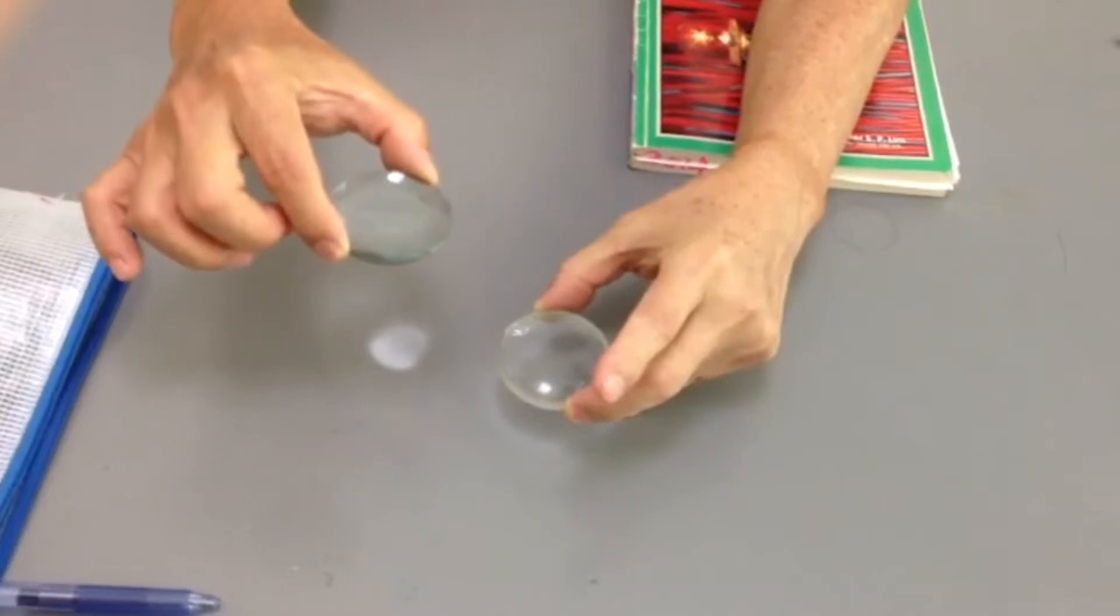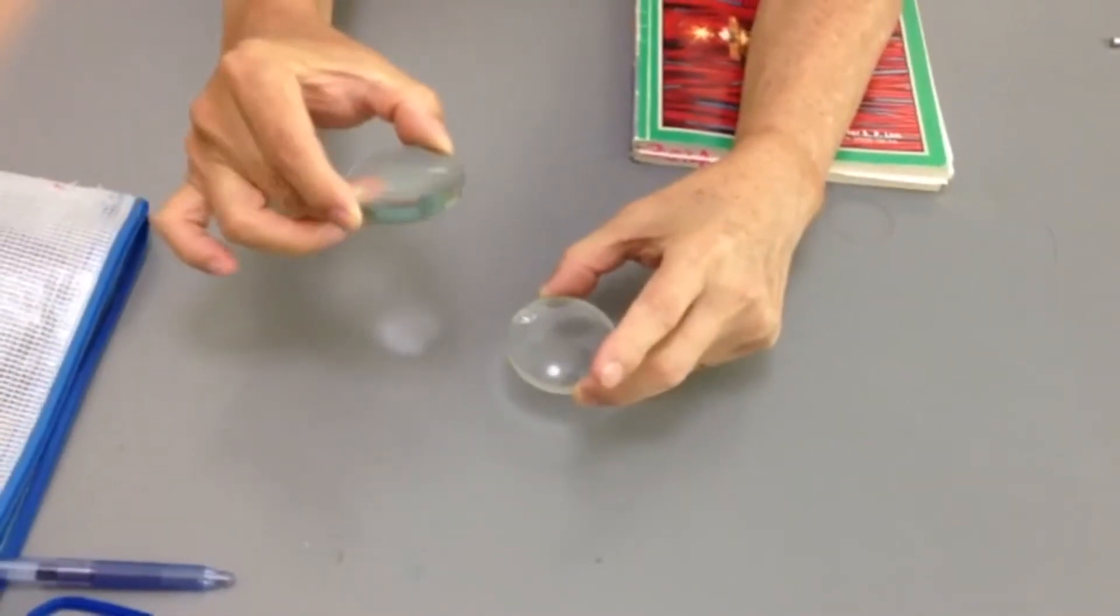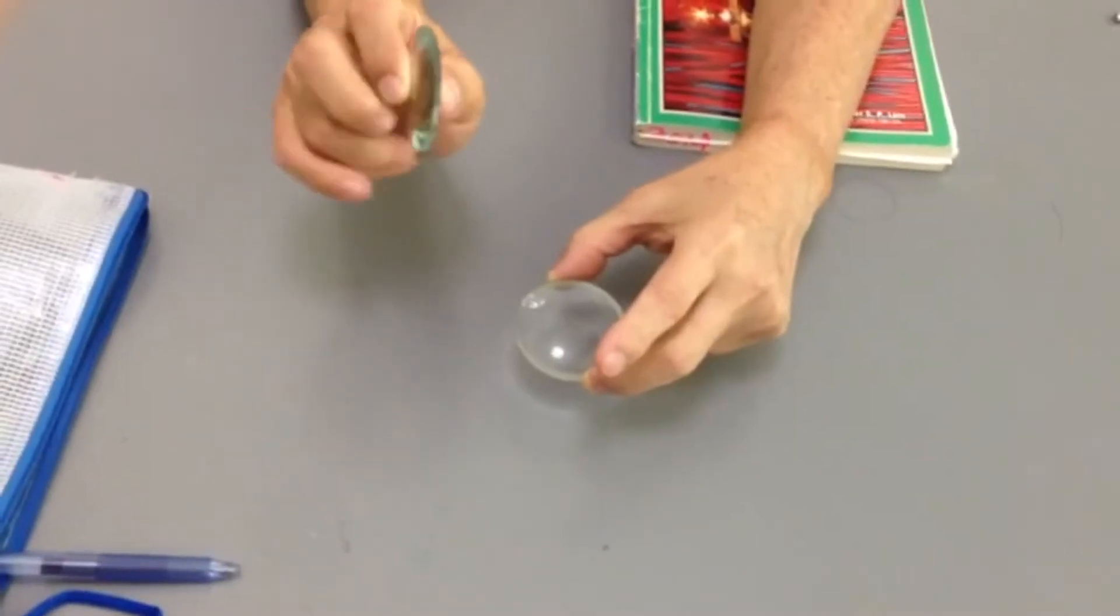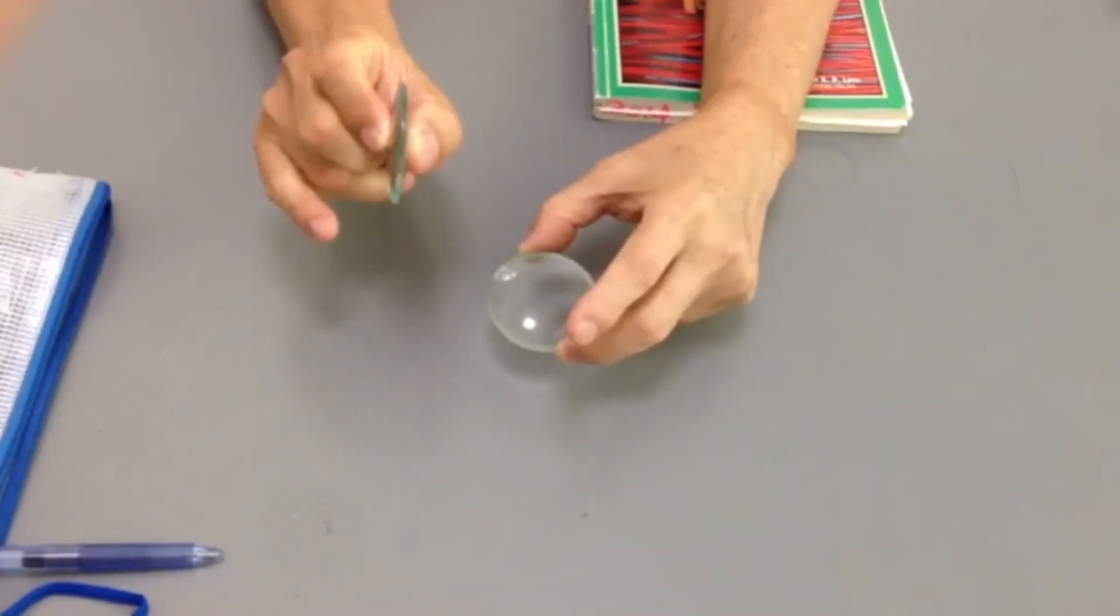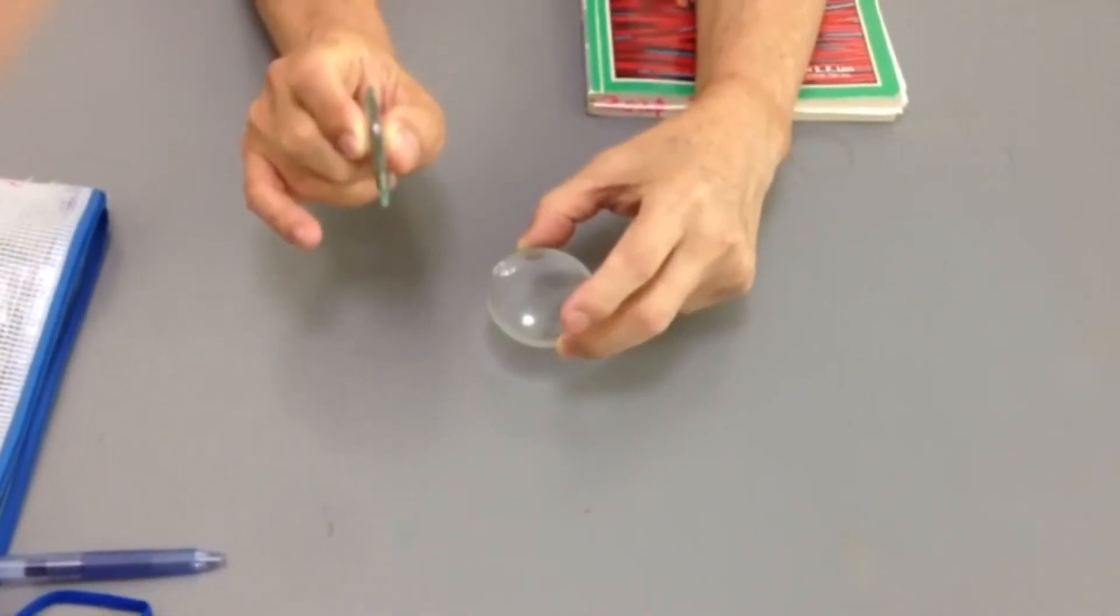Another name for converging lens is bi-convex lens. In convex lenses, the center is thicker than the rim. Can you see? The center is thicker than the rim.